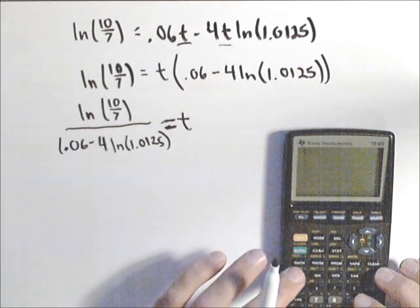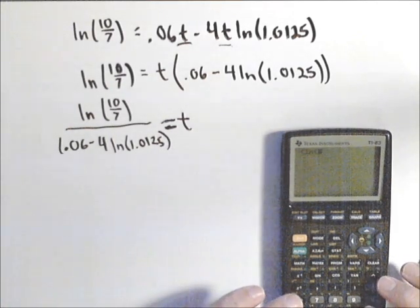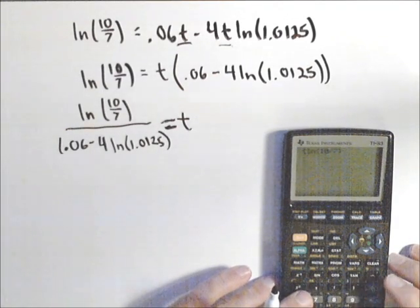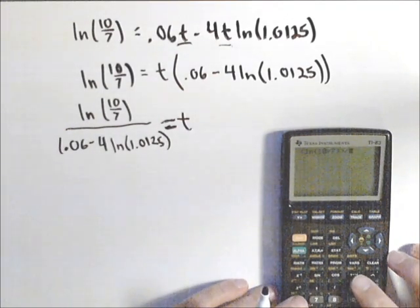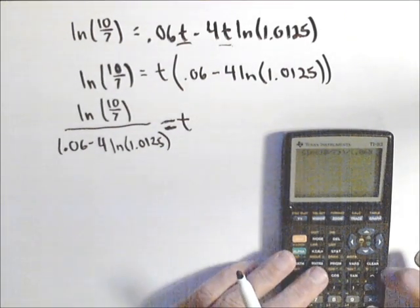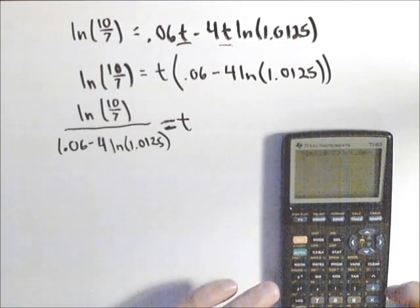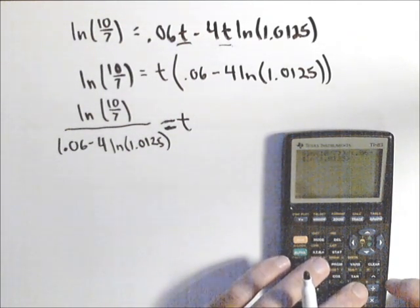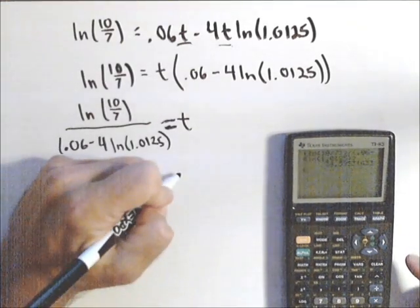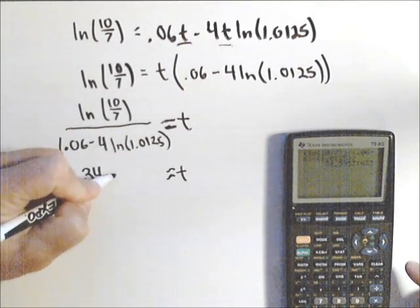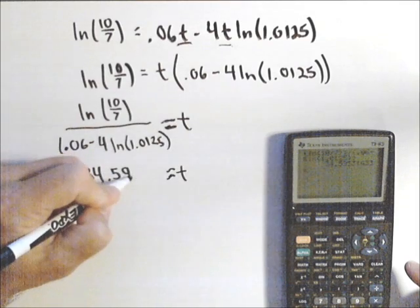So we're going to separate our numerator and our denominator with a set of parenthesis. And in the numerator I'm going to have natural log of 10 divided by 7. And my numerator divided by now definitely a set of parenthesis for the denominator, 0.06 minus 4 natural log of 1.0125. Close up a set of parenthesis for the natural log, close up for the denominator.